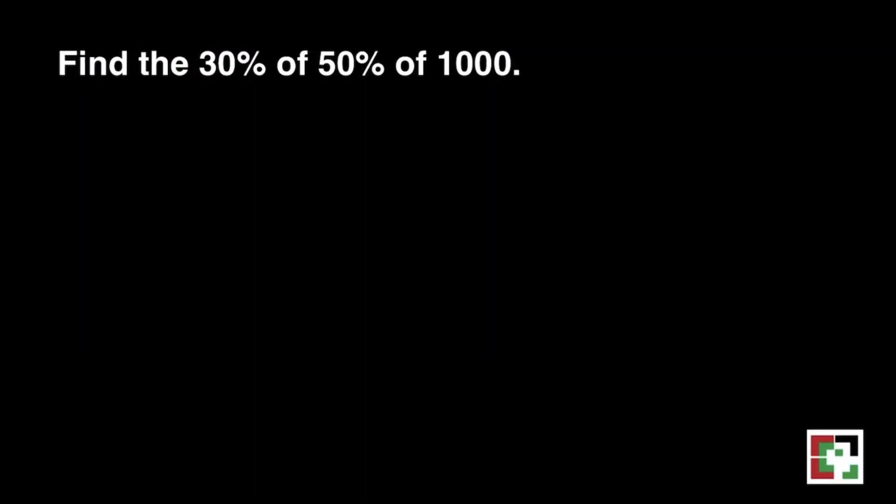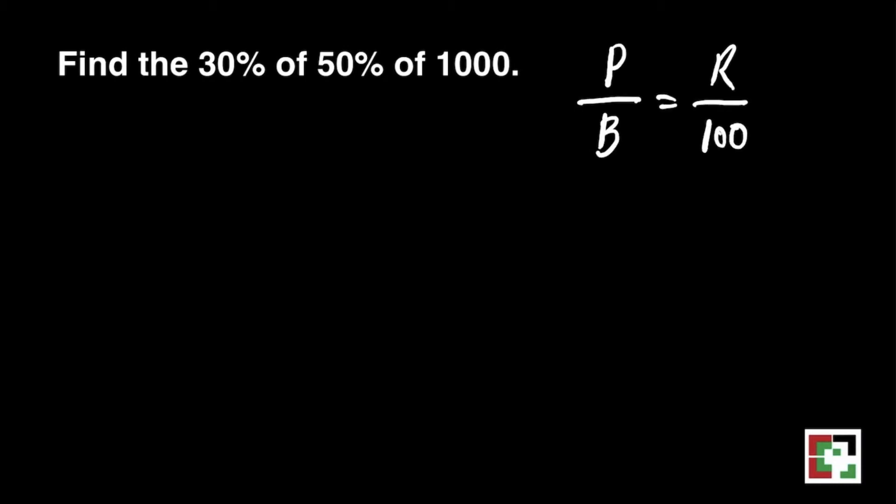Next question, find the 30% of 50% of 1000. We are still going to use the same formula, P over B equals R over 100. We will solve first 50% of 1000. We will substitute n over 1000 times 50 over 100.